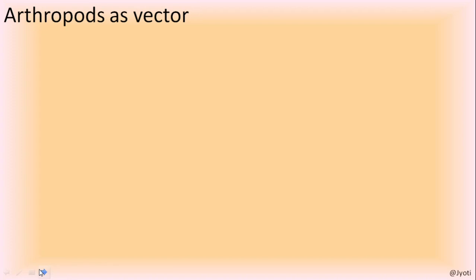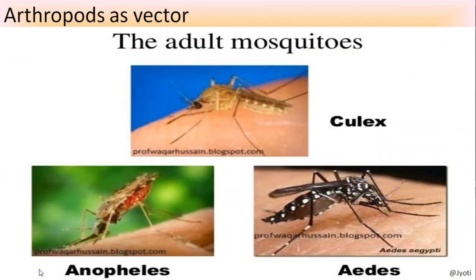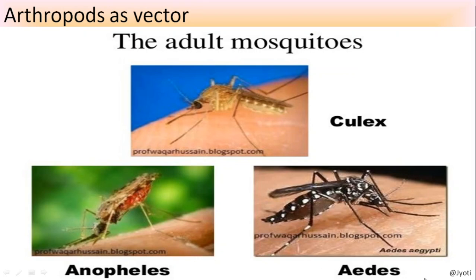Some arthropods act as vectors - carriers of disease-causing pathogens. Culex mosquito carries the parasite Wuchereria bancrofti, which causes filaria, developing in the lymph nodes of humans. Anopheles is the common mosquito that causes malaria - it is the vector for Plasmodium vivax. Aedes mosquito causes dengue fever and carries the virus that causes dengue.